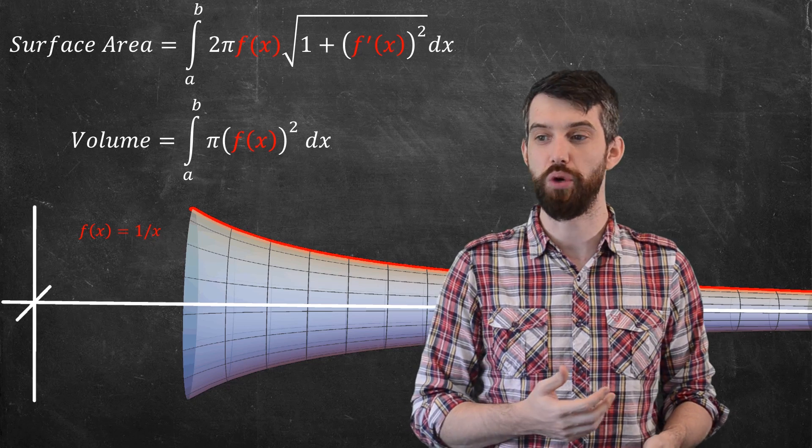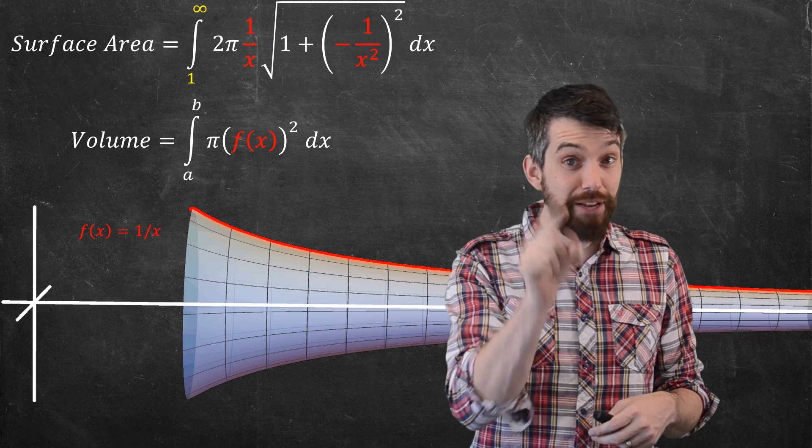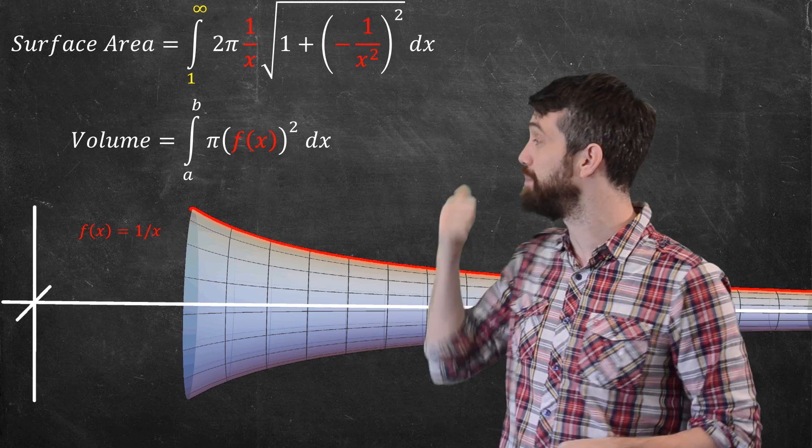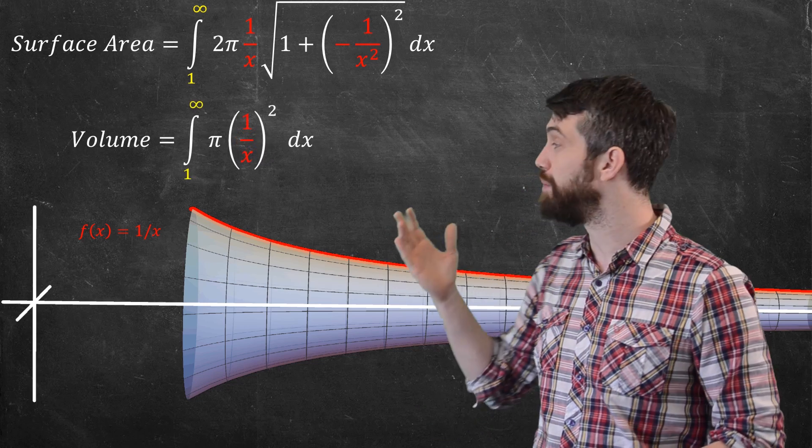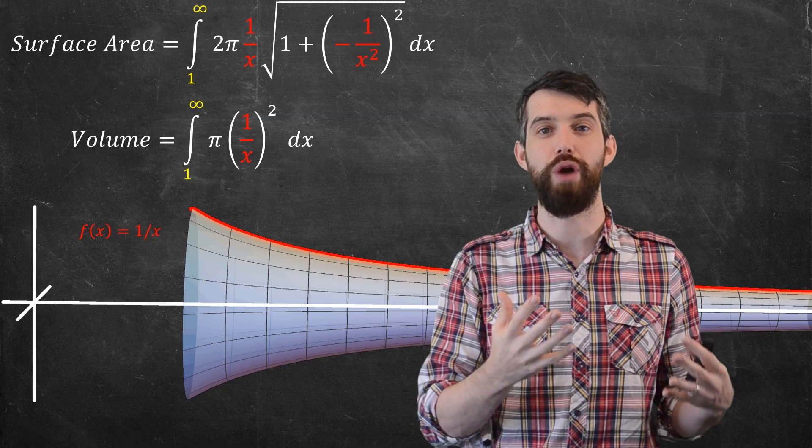Alright, so let's actually compute them out. So for the first one, the surface area, let me plug in 1 up to infinity. And I'll put in the specific function f(x) equal to 1 over x. I plug that in. And likewise, I'll do that for my volume formula. 1 up to infinity again, and again the function 1 over x, now squared.